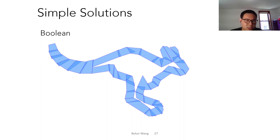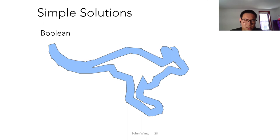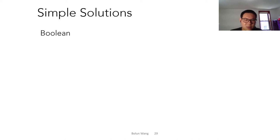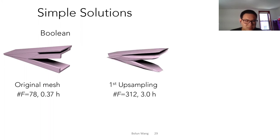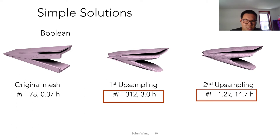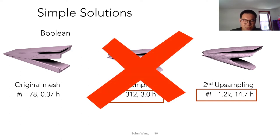Another simple solution is to build a polyhedron for each triangle of the mesh and calculate the union of the polyhedrons, generating an inner and outer layer. We also did an experiment and found that when there are only hundreds of faces in the mesh, it already requires hours just to construct the envelope. So this method is also impractical.